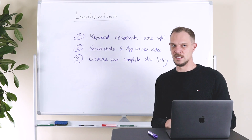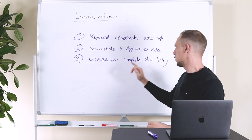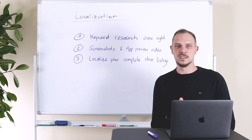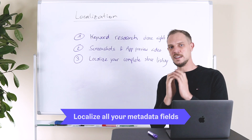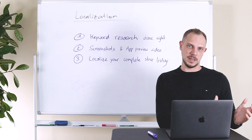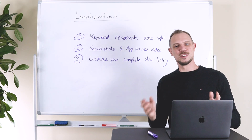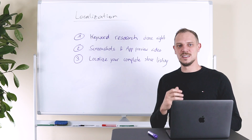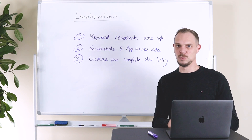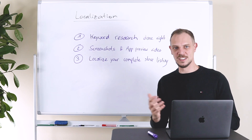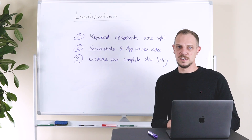Point three is about really localizing your complete store listing — that means your app name, title, subtitle, keywords on the Apple App Store, and the description on both stores. You want to give people visiting your app store page a clear understanding and a good feeling that you support their language, so localize everything that people can see on your app store page.